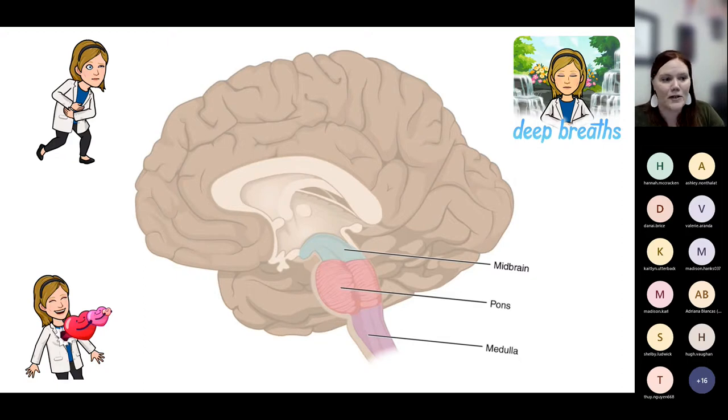The medulla oblongata also helps us with breathing, so dictating some of those things like the length of breath or timing. But the other thing that the medulla is really important for is setting your heart rate. The medullary rhythmicity center helps to determine how fast or slow your heart rate's going. And we can also thank the medulla for everyone's favorite reflexes, things like vomiting, coughing, sneezing. A lot of those types of reflexes come here from the medulla oblongata.